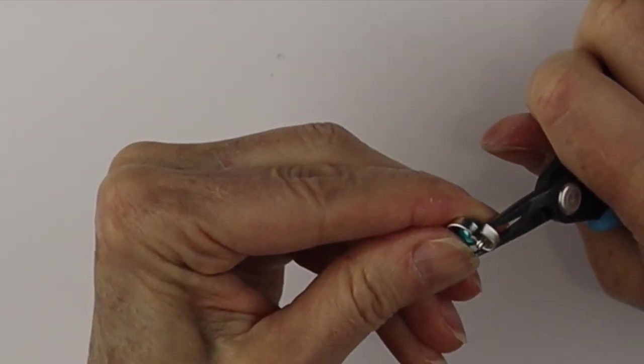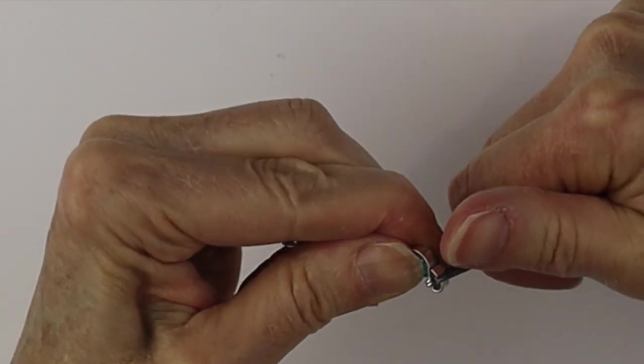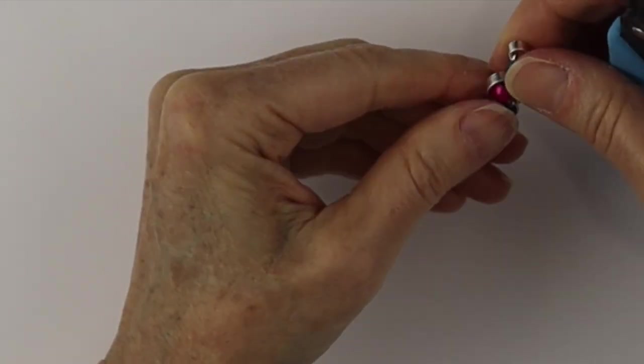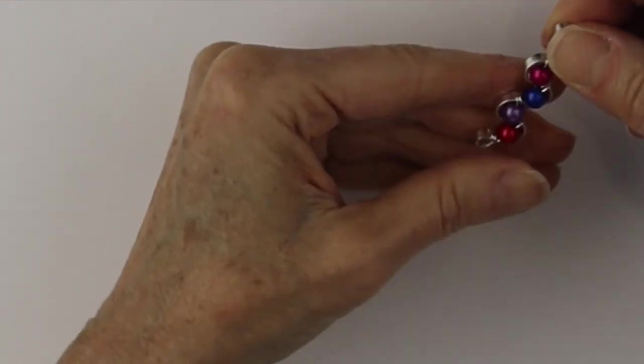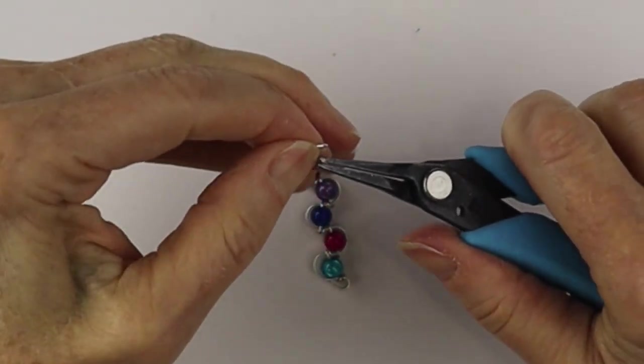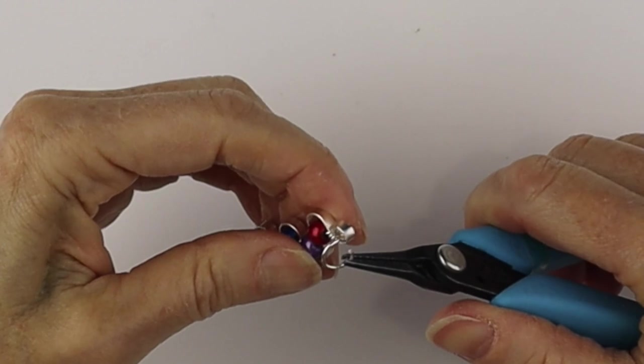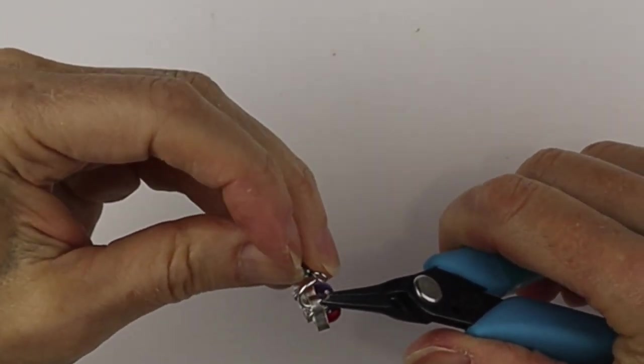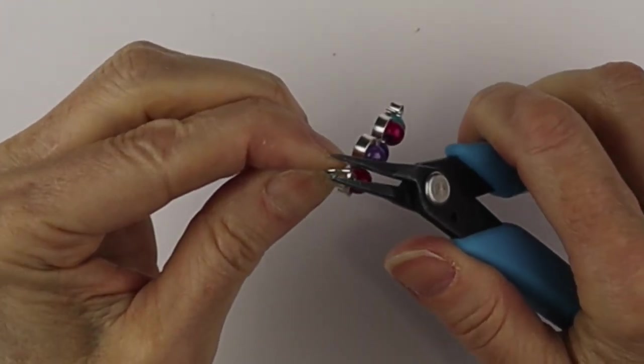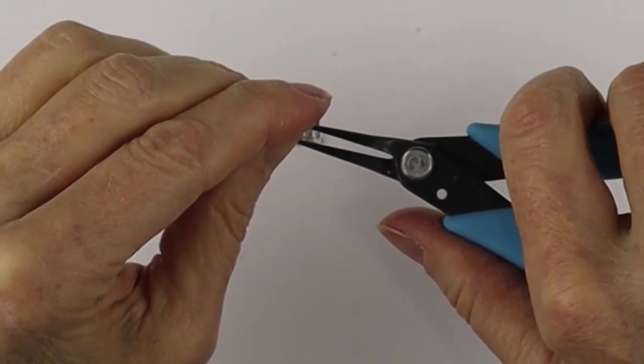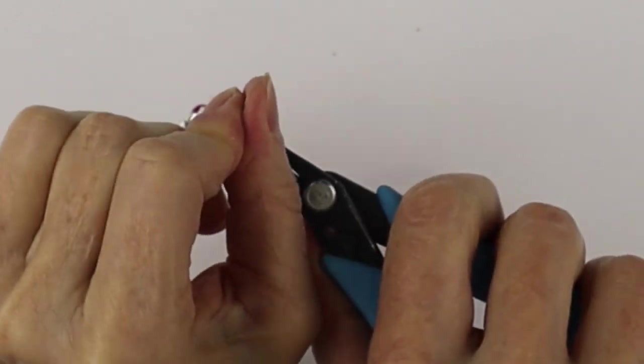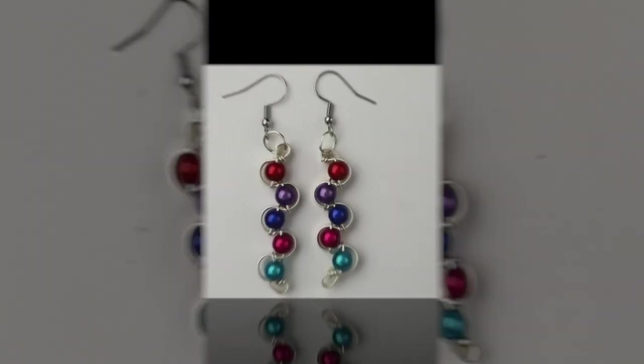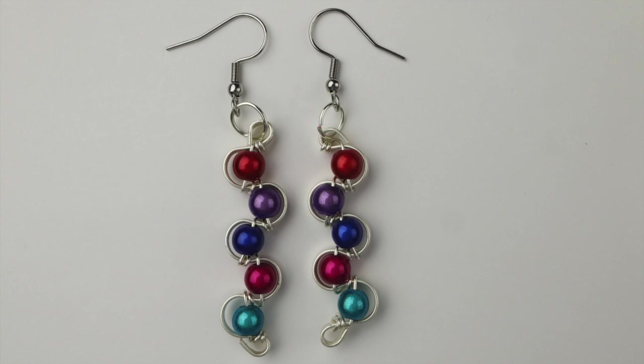We'll do the same on the other side just to finish it off, so there's no little pokey ends. Do any little adjustments that you need. Then I'm going to get a jump ring and put it on the top and get an earring hook. This is the surgical steel earring hooks. I buy them in bulk and then we're going to give it a little half twist so it sits properly. There are our beautiful beaded earrings with the flat wire.